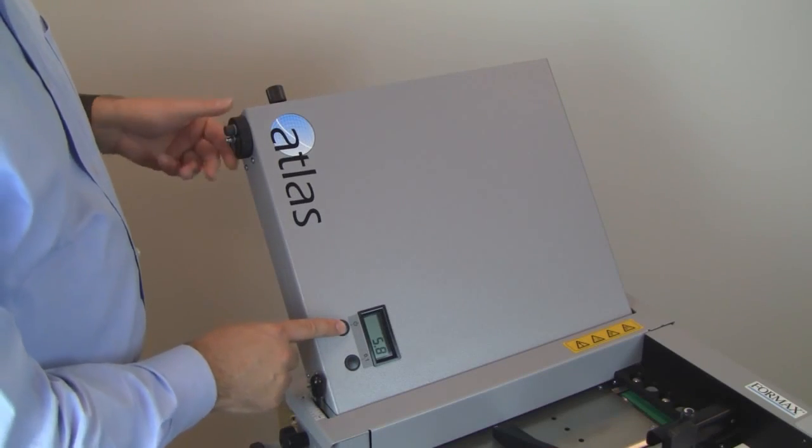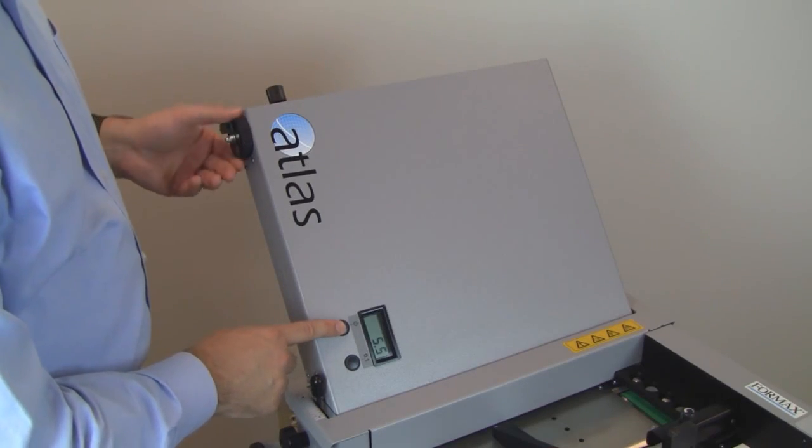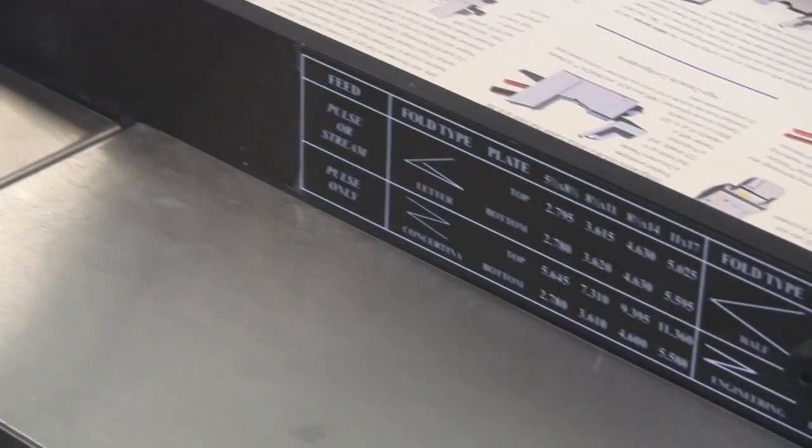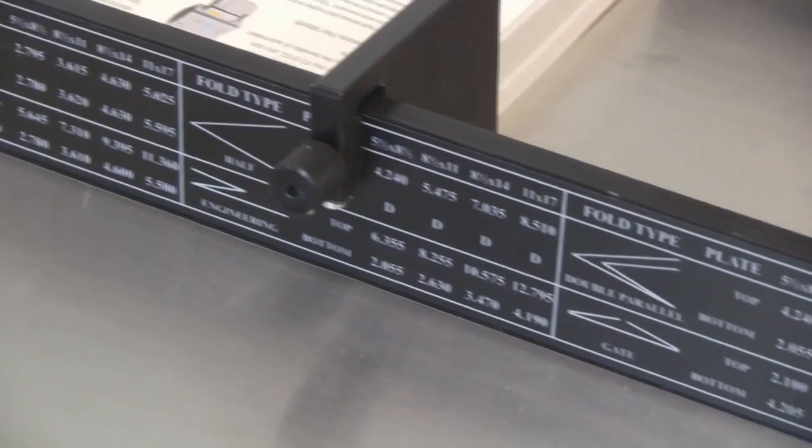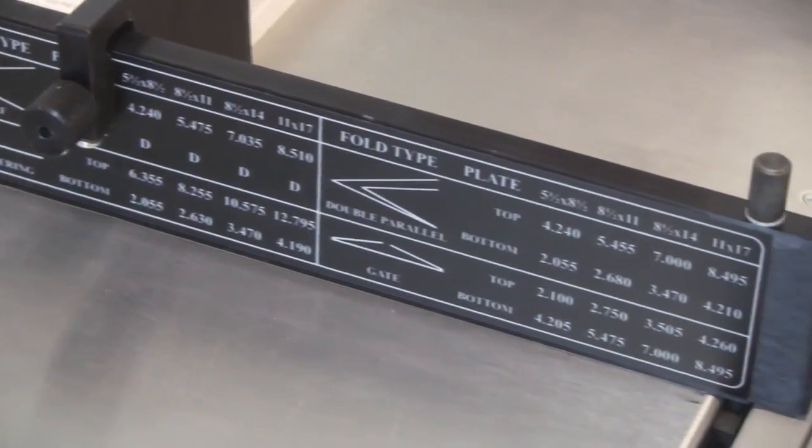The Atlas fold plates are manually set. To begin, locate the fold type and paper size on the fold setup guide. There are six common pre-determined fold settings for six different fold types and three paper sizes.